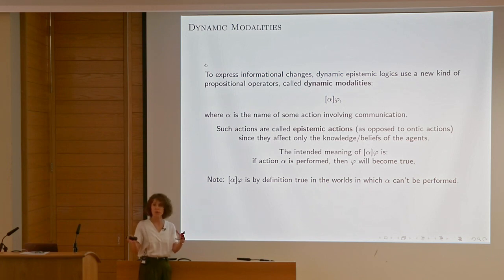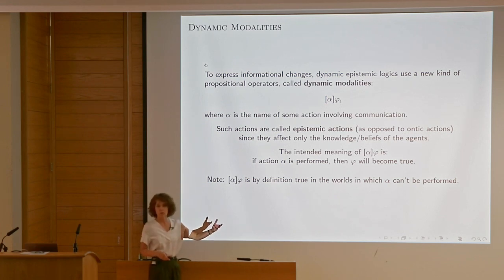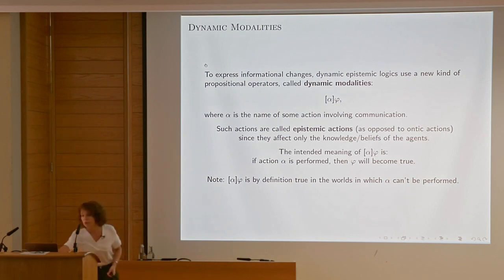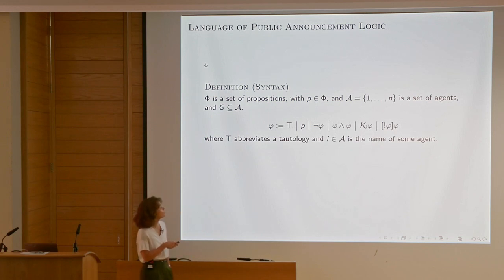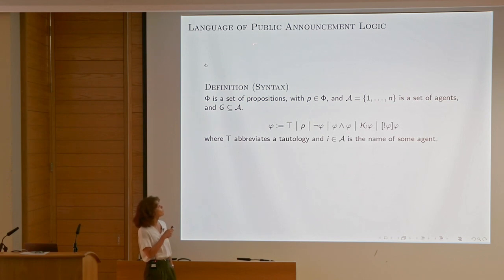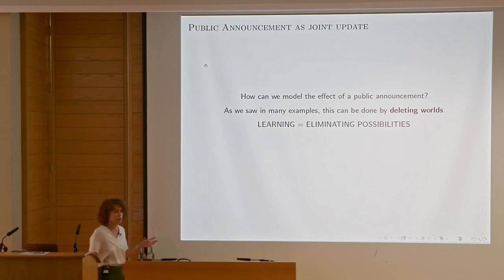We can talk about dynamic changes in the model, starting from the static initial model. For the muddy children, we could say something like: after this many announcements of this type, a certain formula will become true over time. Formally, we just add an extra operator — a dynamic operator. In this case it will be the public announcement logic operator: after a certain announcement of a formula, another formula will be true. This is called public announcement logic — simply this eliminative type of learning in which announcing a formula makes us eliminate possibilities.